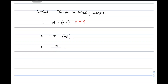For number 2, we have negative 100 divided by negative 10. Since the signs are the same, we have a positive answer. Dividing 100 by 10, that will give you 10 — so the correct answer is 10. For number 3, we have negative 16 divided by 4. The signs are different, so you have a negative quotient. 16 divided by 4 is 4, so the correct answer for number 3 is negative 4.